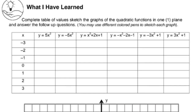What I Have Learned: Complete the table of values and sketch the graphs of the six quadratic functions in one graphing paper. Answer the follow-up questions. You may use different colored pens to sketch each graph. Substitute the x values into each equation, find y, plot the points, then connect with a smooth curve.